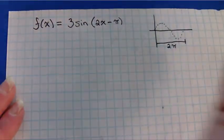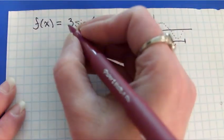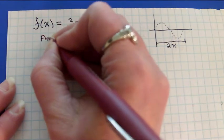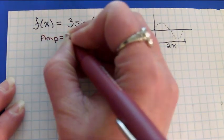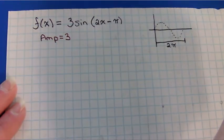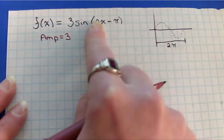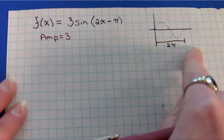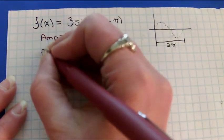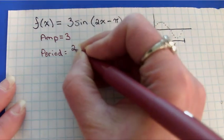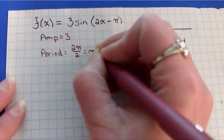Well let's talk about what all is different on this one. The three in front is going to affect the amplitude. The amplitude is going to be three. The number in front of the x is going to affect the period. The normal period is 2π, but that's going to give me a period of 2π divided by 2, which would be π.